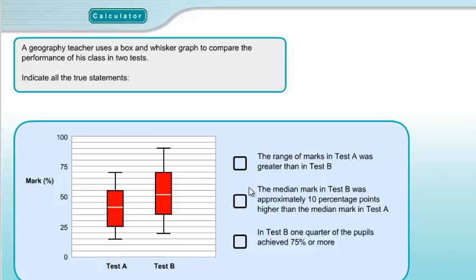Statement 2: The median mark in test B was approximately 10 percentage points higher than the median in test A. The median is the bar across the middle of the box. For test A it's a little above 40, and for test B it's a little above 50. Since the question uses the word 'approximately', there is approximately a 10 percentage point difference. So that's true.